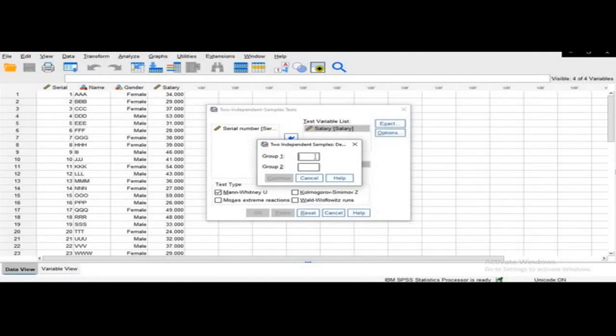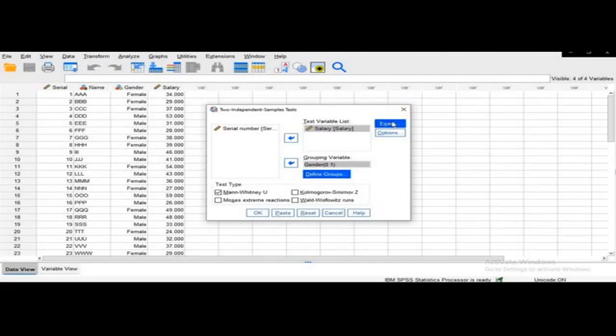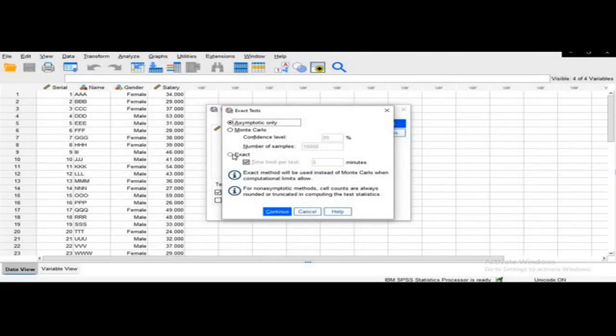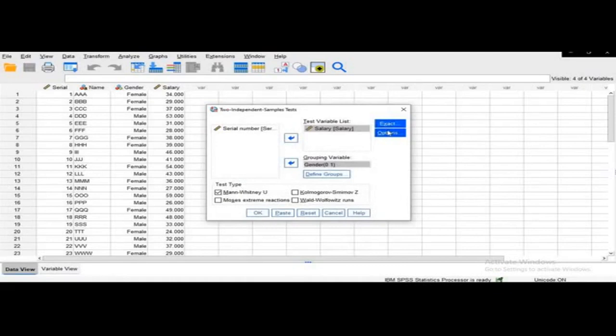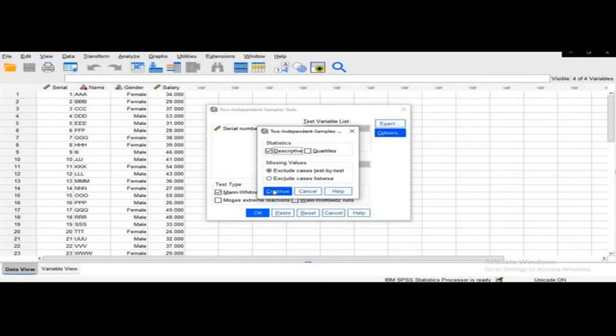Then go to Exact and to get the exact value click on Exact and press Continue. Then go to Options, select Descriptive Statistics and press Continue.